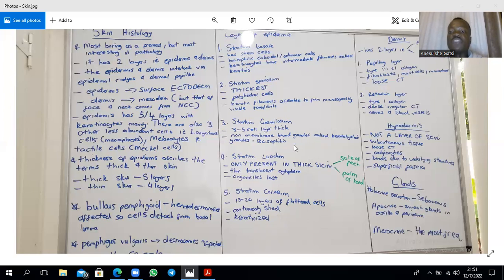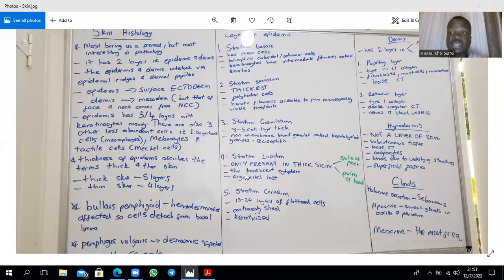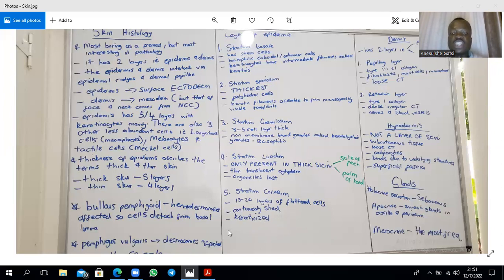Filaggrin is made from histidine and cysteine-rich proteins. The stratum lucidum is present in thick skin — the skin found on the sole of the foot and the palm of the hand. This thick skin has a thicker epidermis compared to thin skin. The thickness of the epidermis is what ascribes the term thick and thin skin, not overall skin thickness. The stratum lucidum is sometimes considered a subdivision of the stratum corneum. The stratum corneum is a layer of 15 to 20 flattened cells which are continuously shed off, and it is highly keratinized.